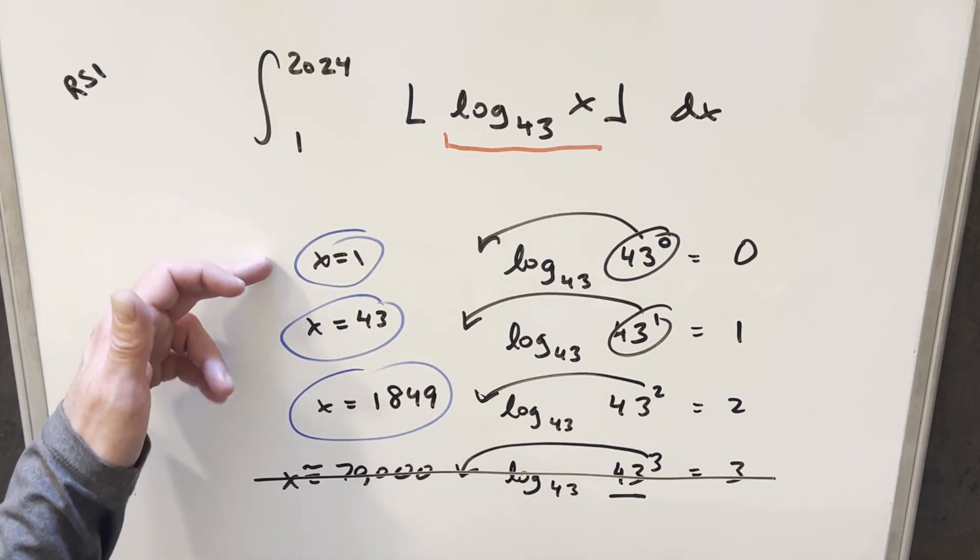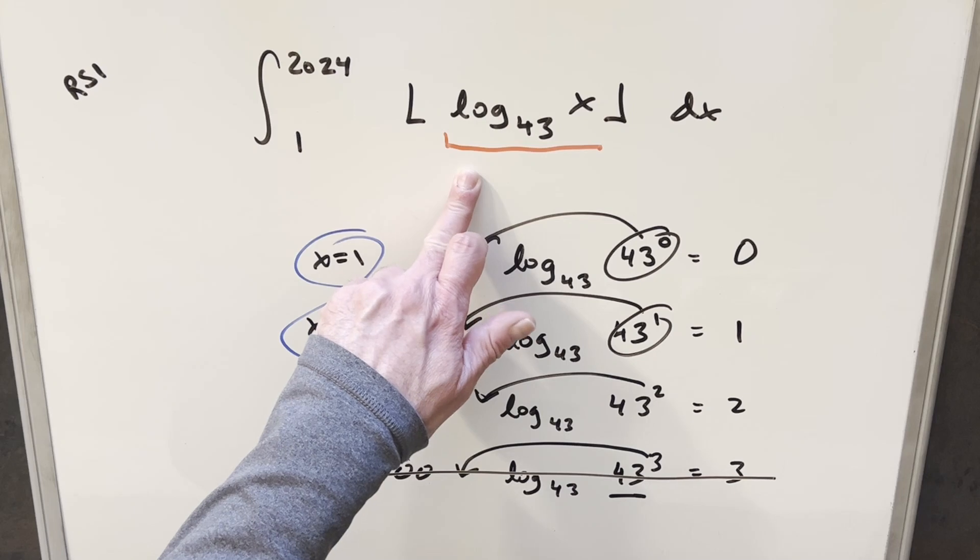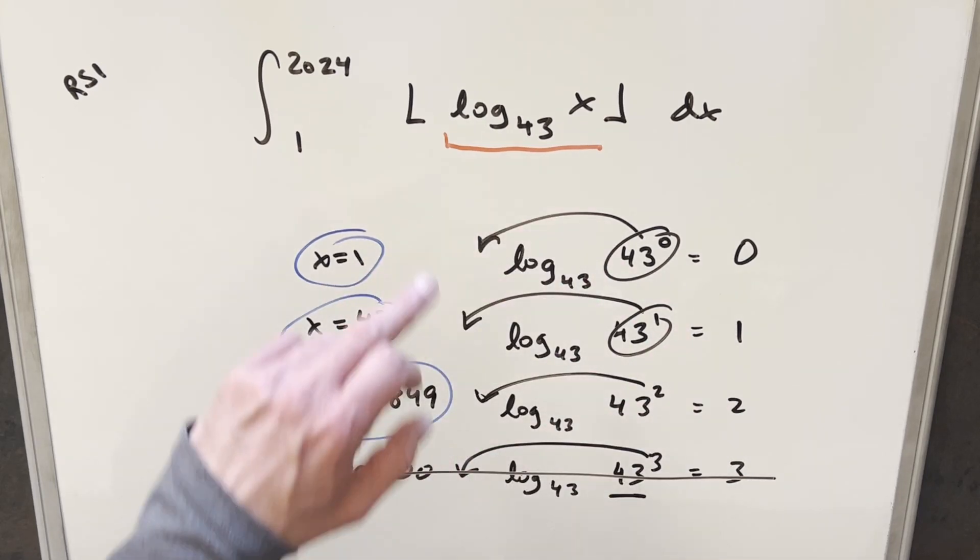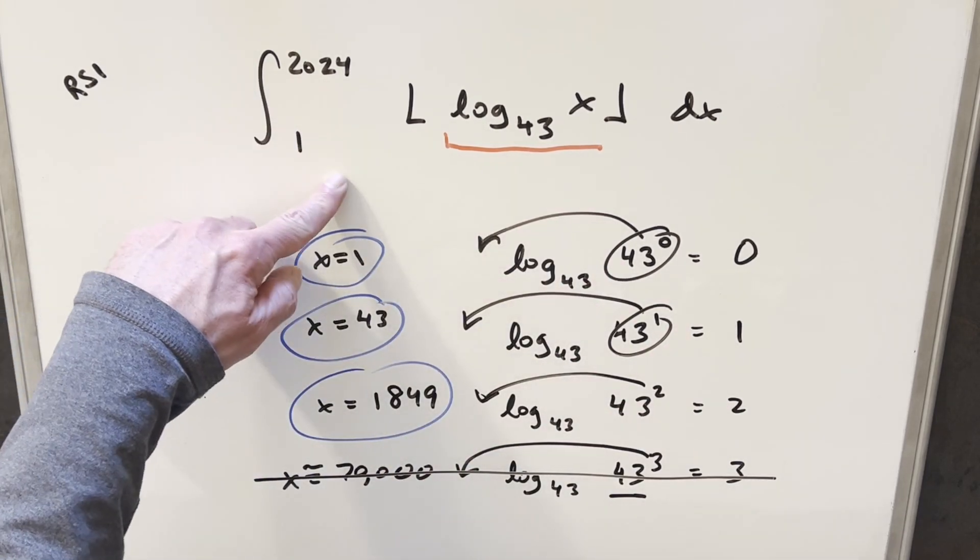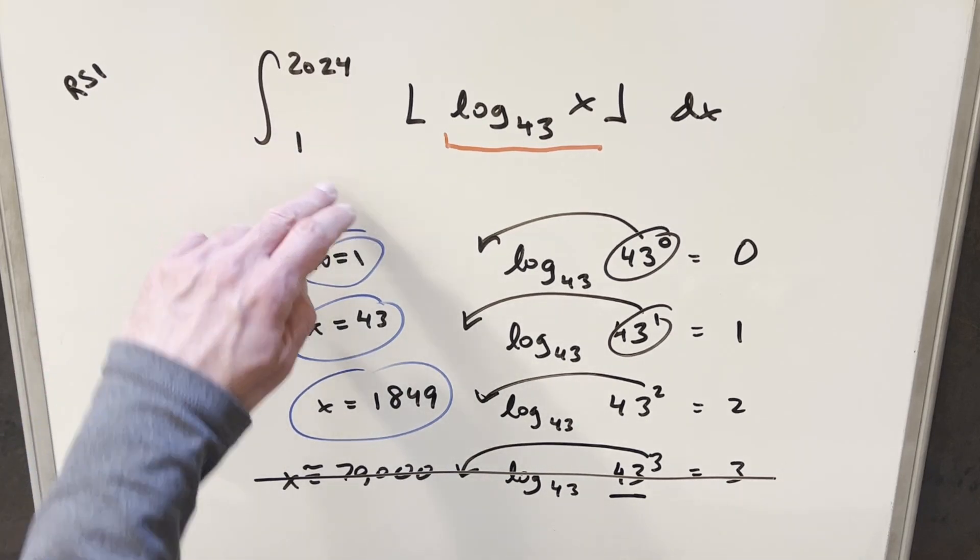So what we found here is we've got these three x values, where our input into the floor function is going to always be an integer. So using these three points, it's going to be a good way for me to just break up this integral into three different integrals.